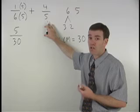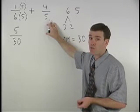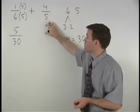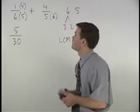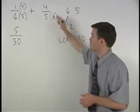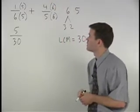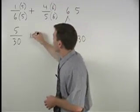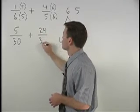For our second fraction, we have a five in the denominator, and we want a common denominator of thirty, so we must multiply this five by six. And when we multiply the denominator of a fraction by six, we must also multiply the numerator by six. So we have plus twenty-four over thirty.